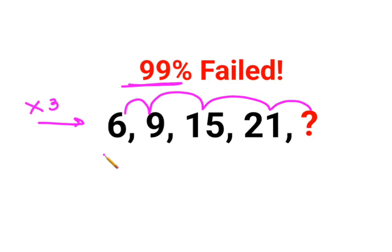So here we say 3 multiplied by 2 gets you 6, then 3 multiplied by 3 gets you 9, 3 multiplied by 5 gets you 15, 3 multiplied by 7 gets you 21. Now if you see over here,